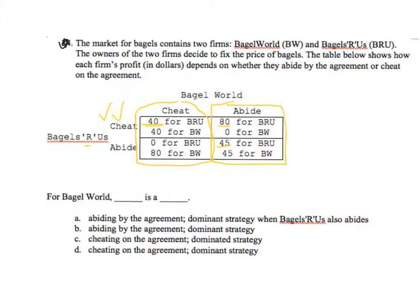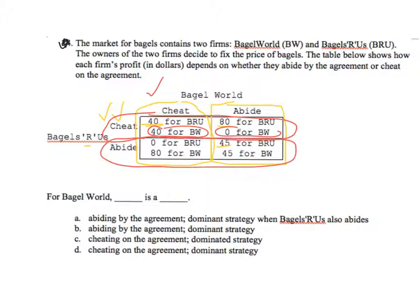So if Bagel World's dominant strategy is the same, we've got a prisoner's dilemma. Let's look at it from the point of view of Bagel World. If Bagel World thinks Bagels R Us is going to cheat, Bagel World's best play is to cheat. Notice that 40 for Bagel World is better than 0 for Bagel World. If, on the other hand, Bagel World thinks Bagels R Us is going to abide, then Bagel World's best play is to cheat. 80 is better than 45.